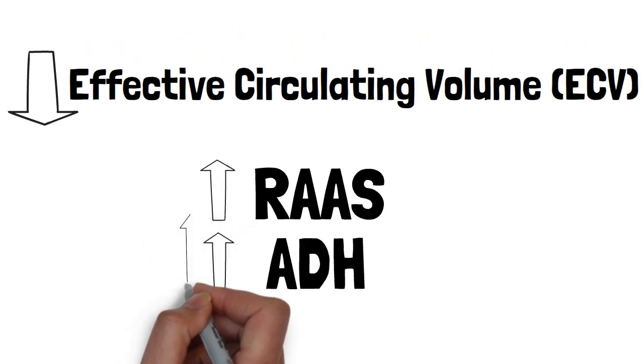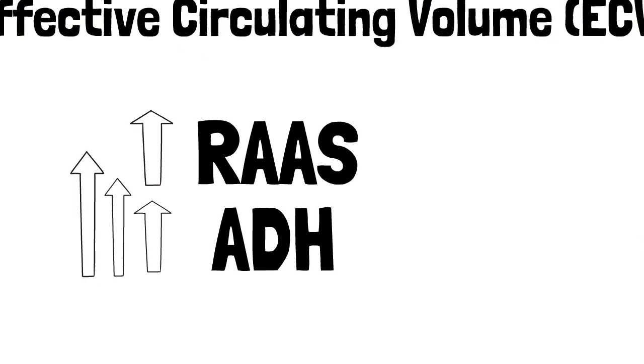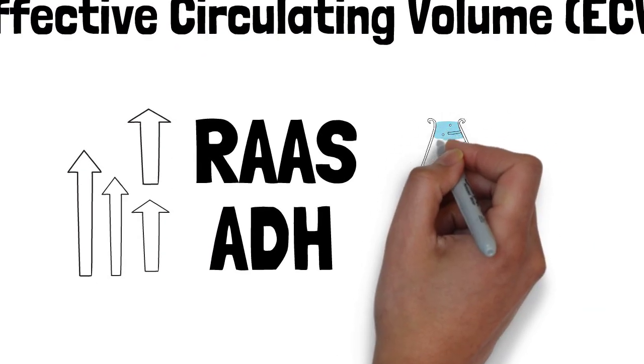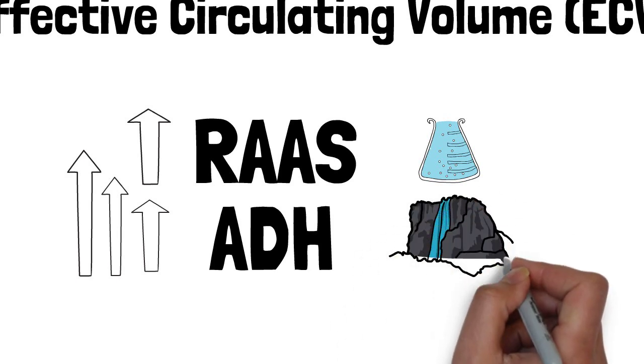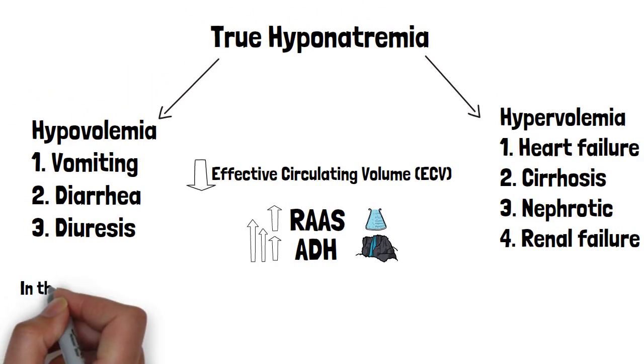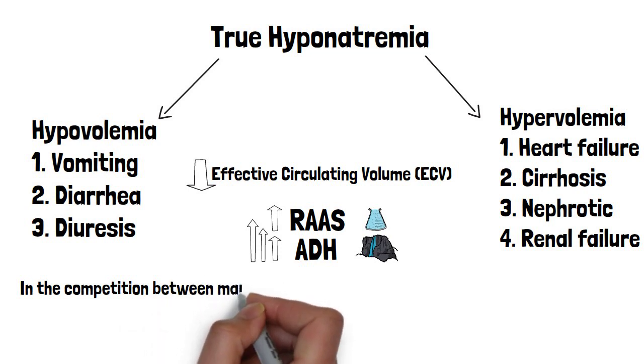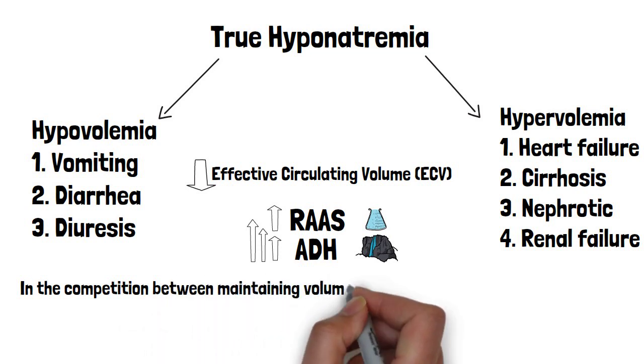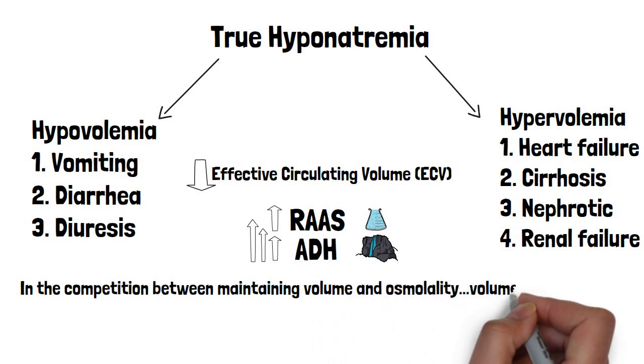Now, the problem here is that ADH works faster, and ADH works better than RAS ever will. Another way to think of it is that RAS is like a science experiment. It's a beaker of salt and water, perfectly going to give you iso-osmotic gains in your volume, where ADH is just an indiscriminate waterfall, no salt whatsoever. So when you have a ton more water than you do salt and water, you're just adding net more water, which will make you more hyponatremic. So if you'll remember that in the competition between maintaining volume and osmolarity, volume is always going to win that battle.